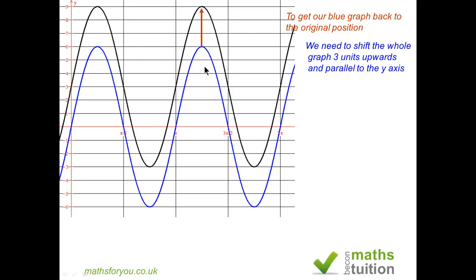So every corresponding point moves 3 units upwards. This means that the equation of the graph is now 6 sin 2x plus 3, and that's what's required.